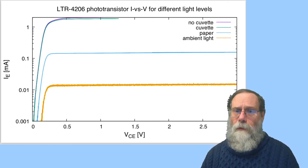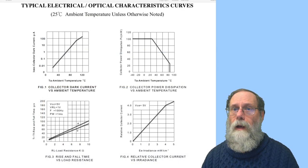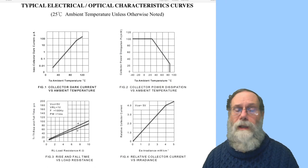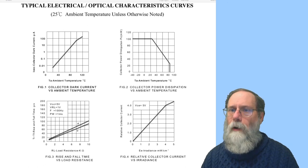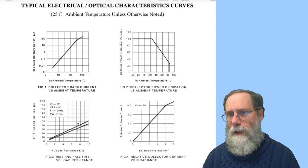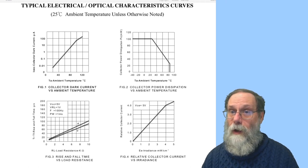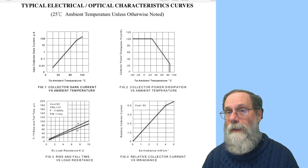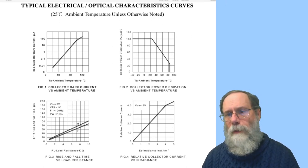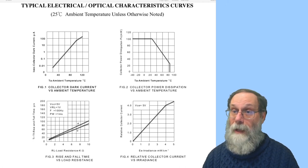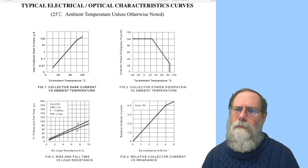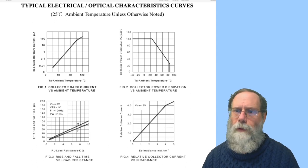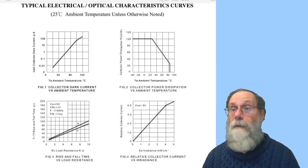Let's look at a data sheet for one of these phototransistors. Now this is for the same one that I measured, I believe, the LTR 4206. And what you've got here are several different plots. The one on the bottom right, figure four here, relative collector current versus irradiance. You can see that it's basically a straight line from zero up to four milliwatts per square centimeter. And then it kind of tapers off. That tapering off is because the transistor amplifier that's amplifying the current is not a perfectly linear amplifier over its entire current range. So you get usually about three or four decades of linearity out of a phototransistor, whereas a photodiode could have seven decades of linearity.